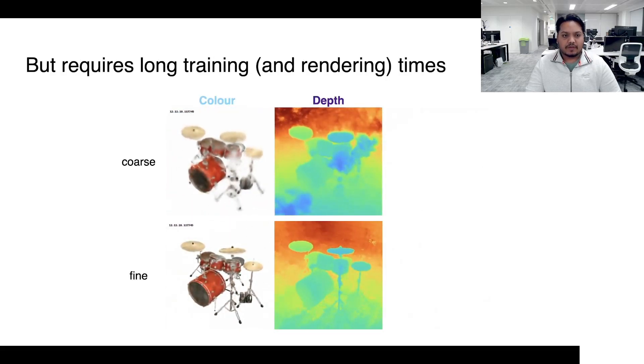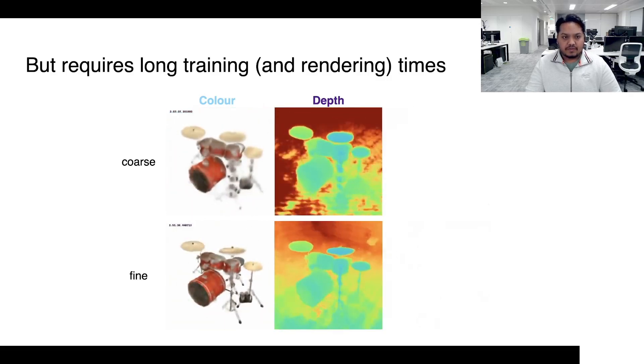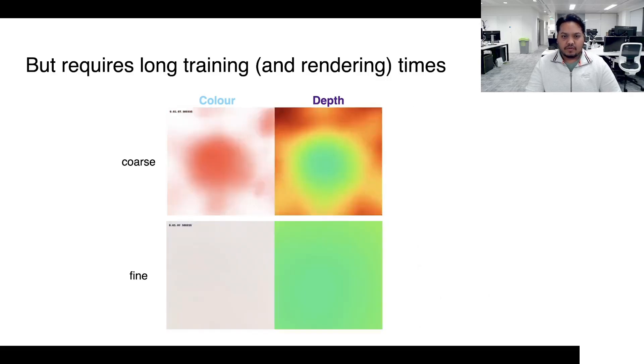However, the multi-layer perceptron, i.e. MLP-based representation introduced by NeRF is very slow in training as well as in rendering. Specifically, the training time required is of the order of hours.